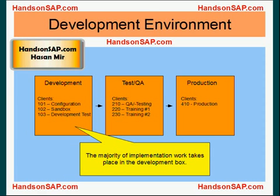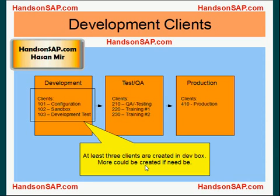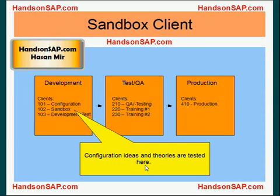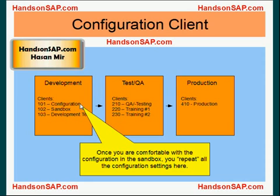Majority of the implementation work takes place in the development box — that is the first box. At least three clients are created in that box; more than three could be created if need be. Configuration ideas and theories are tested in the sandbox client. The sandbox client is the starting point if necessary — if consultants need to experiment or do some kind of idea testing, that will take place in a sandbox. That's going to be your starting point if sandbox is required; otherwise, configuration can directly take place in the configuration client.